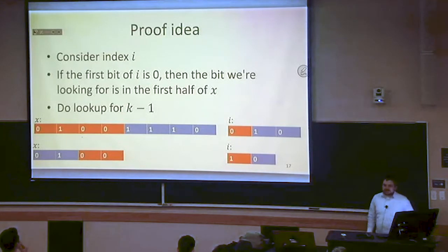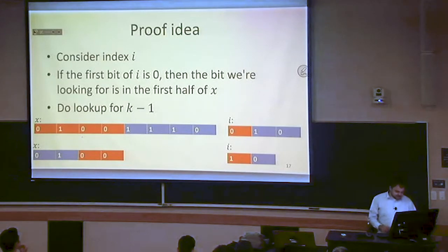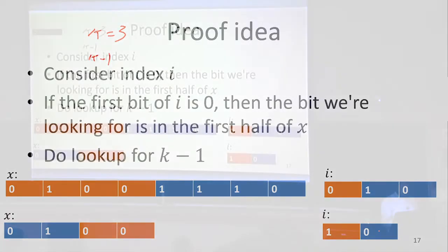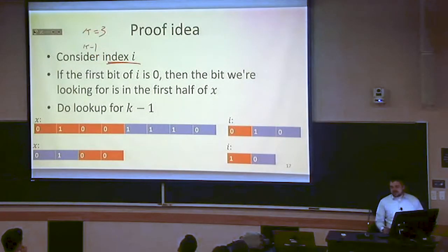We're going to do this by induction — an inductive argument for why we can always find a NAND circuit to do lookup. The idea is that we're going to define lookup sub k in terms of lookup sub k minus 1. So here we're trying to do lookup where k equals 3, and we're going to define it in terms of lookup k minus 1, looking at an index of size 2.